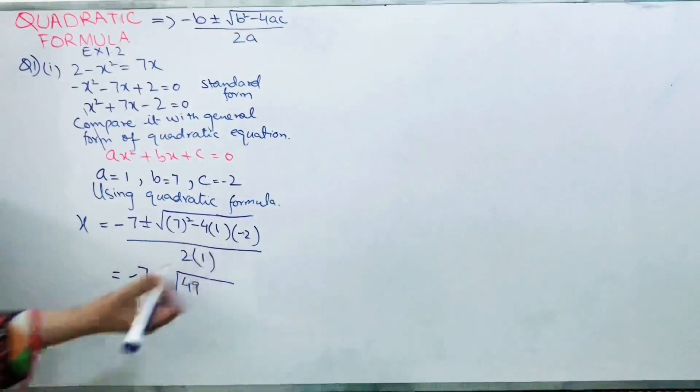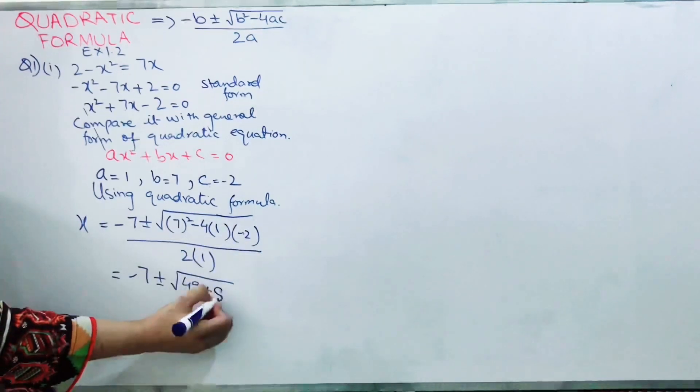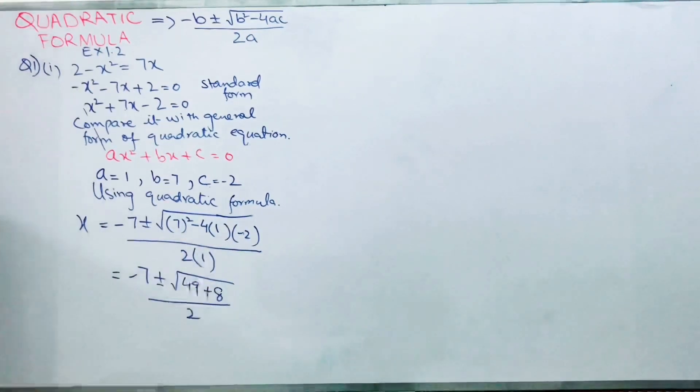minus minus is plus, 4 into 2 is 8, all by 2. 49 plus 8 equals 57. So minus 7 plus minus root 57, all by 2.